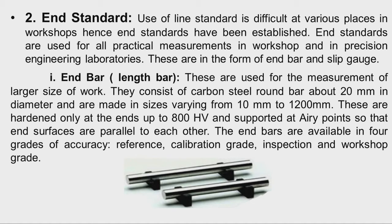The second type of material standard is the end standard. We have a metallic bar, maybe of round or square shape, and the distance between the end surfaces of the bar is taken as the standard. These are more convenient to use compared to line standards, and are used for practical measurements in the workshop and in inspection laboratories.